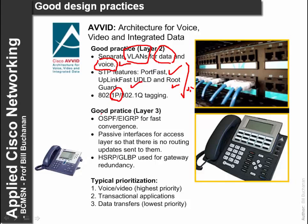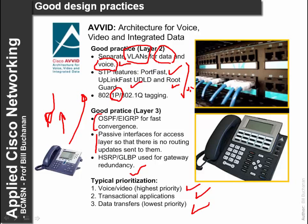At layer 3, it is a good idea to use an event-driven routing protocol such as OSPF or EIGRP. There should be passive interfaces at the access layer when we connect, so that routing tables are not broadcast into the access network. HSRP or GLBP are used for gateway redundancy so that nodes can find alternative gateways. Typically, voice and video are given the highest priority, transactional business-critical applications are second, and data transfer has the lowest priority.